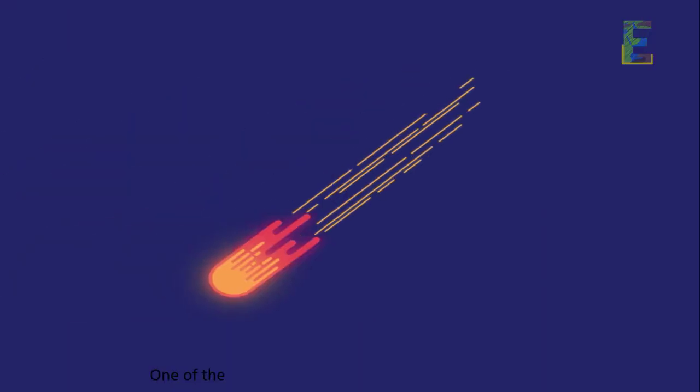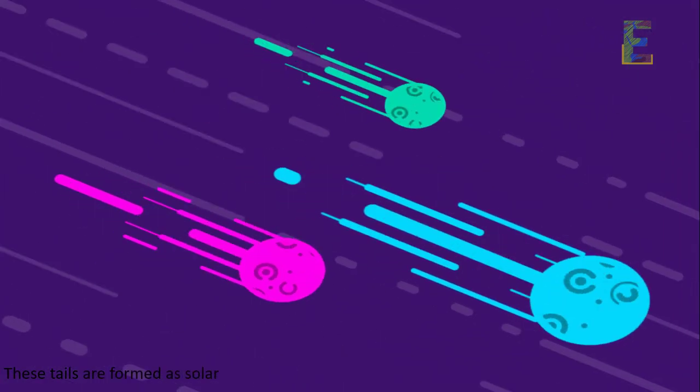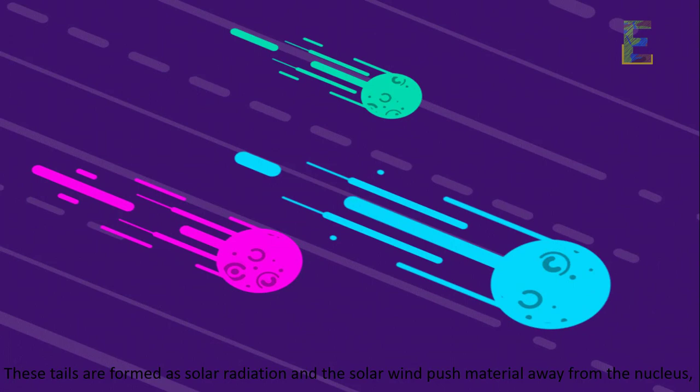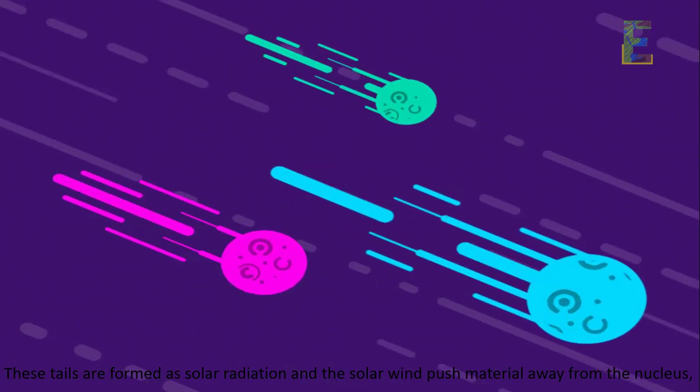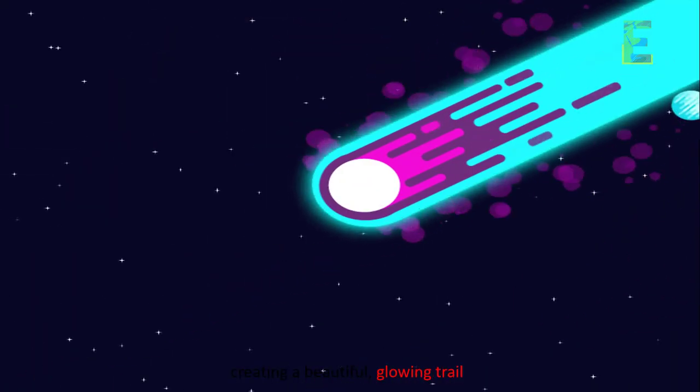Comet tails. One of the most striking features of comets is their tails. These tails are formed as solar radiation and the solar wind push material away from the nucleus, creating a beautiful, glowing trail.